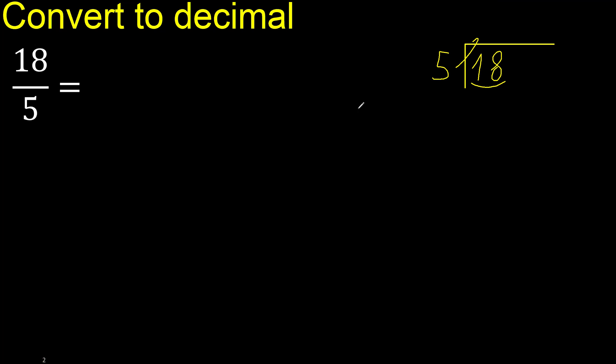5 multiplied by which number is nearest to 18 but not greater? 5 multiplied by 4 is 20 — 20 is greater. 5 multiplied by 3 is 15 — 15 is not greater.